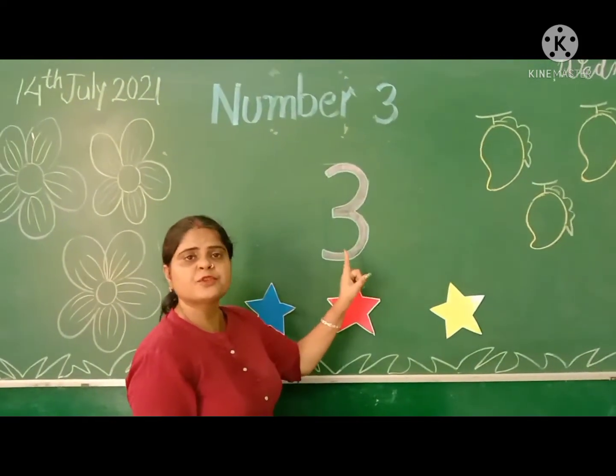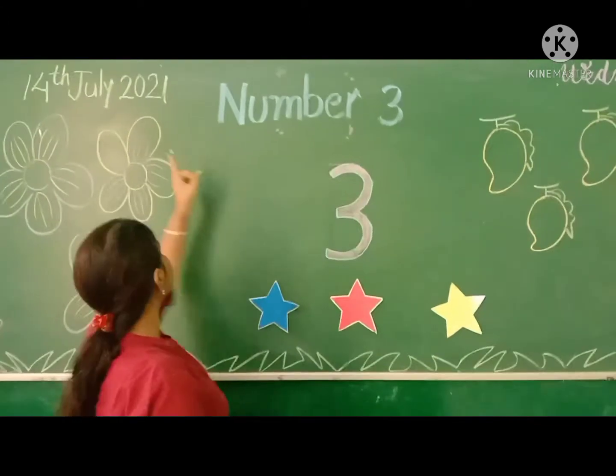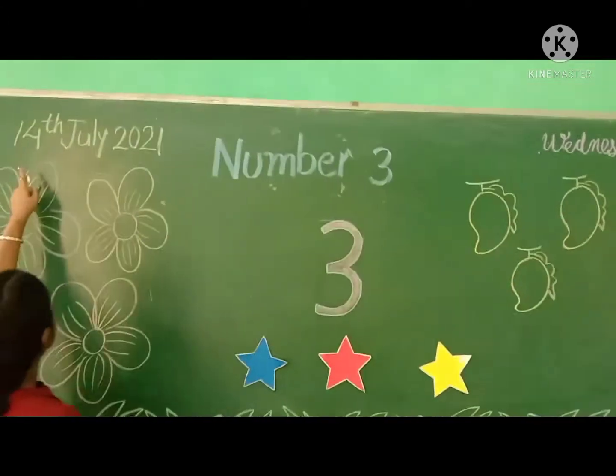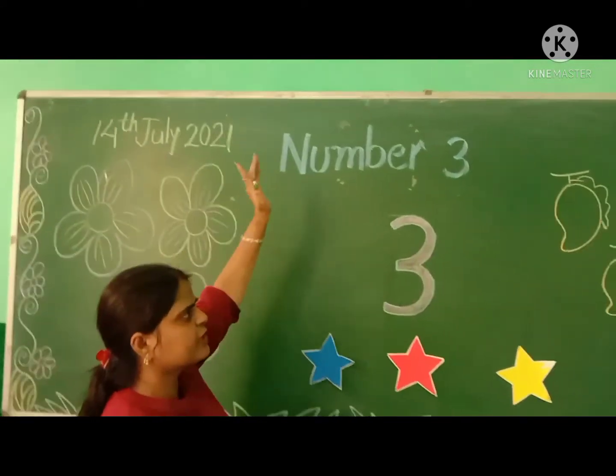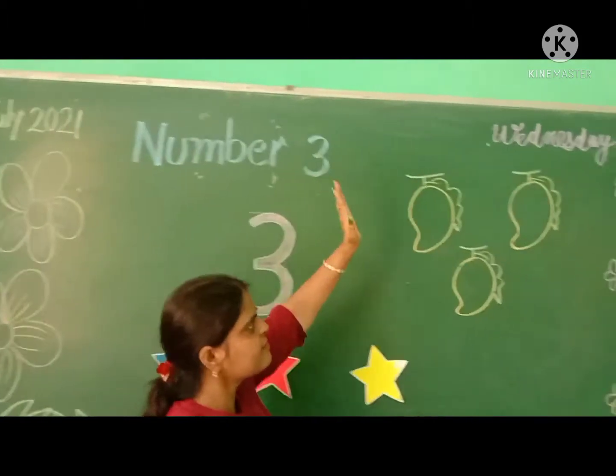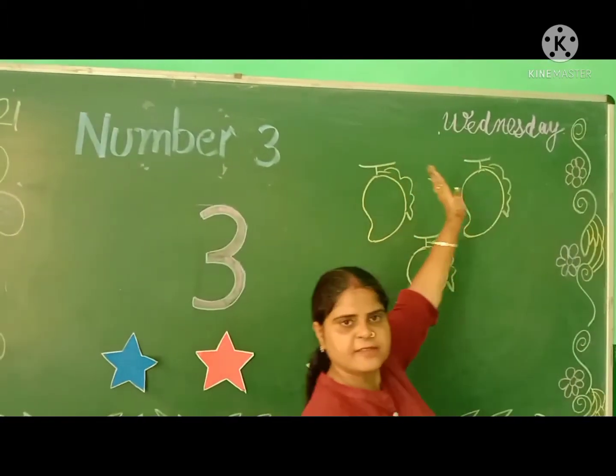Firstly, all of you look at the green board. Today's date is 14th of July 2021 and the day is Wednesday.